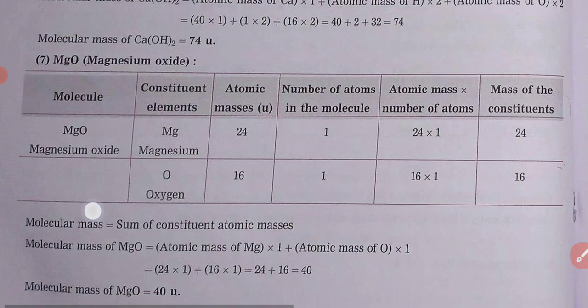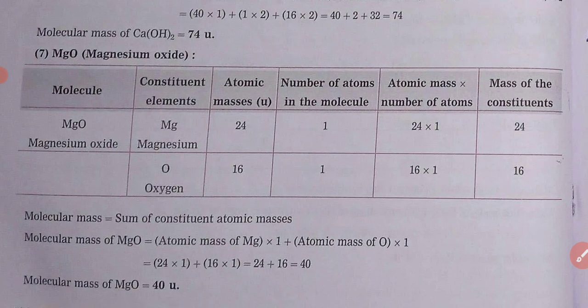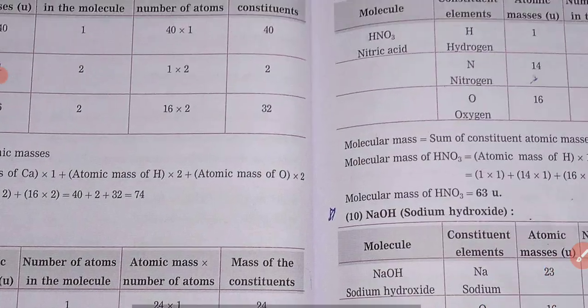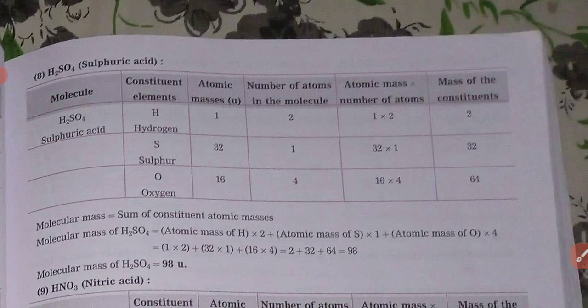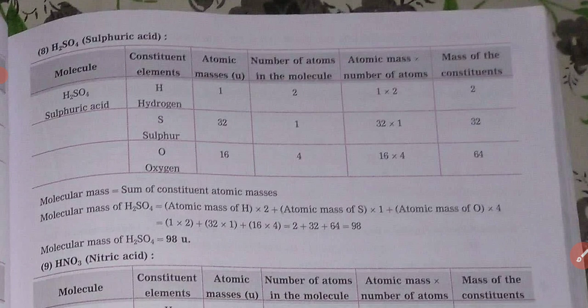Fifth question is magnesium oxide. Eighth question, sulfuric acid. The molecule is then constituent elements, atomic mass, number of atoms, molecular atomic mass, number of atoms, and mass of the constituent. The solution is provided, students.